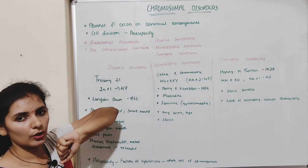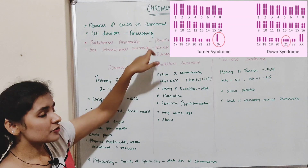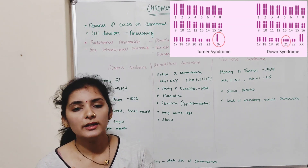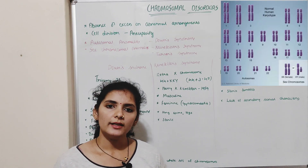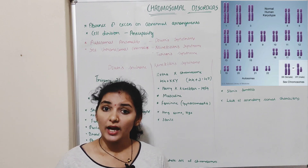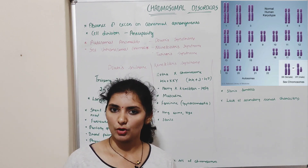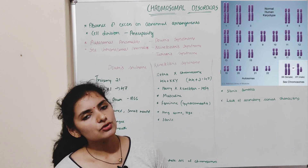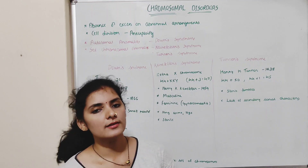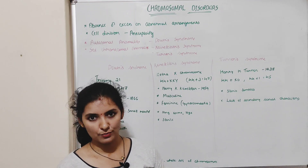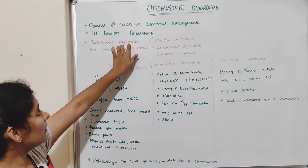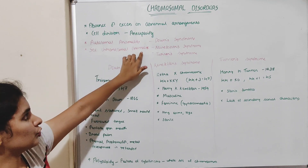Aneuploidy refers to addition or deletion of one or more chromosomes from the normal diploid set. In the case of humans, the diploid number of chromosomes is 46 — 44 chromosomes are called autosomes and the other two are called allosomes or sex chromosomes. Anomalies can occur in both autosomes or sex chromosomes.